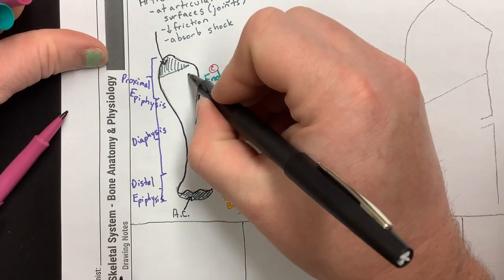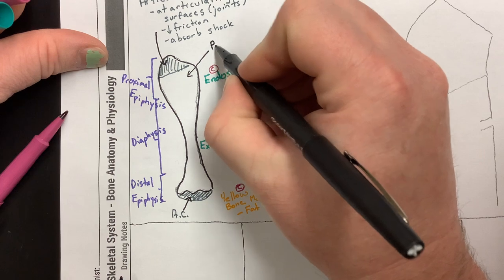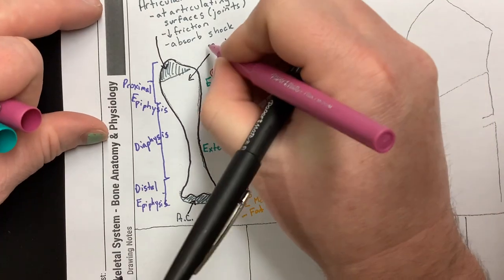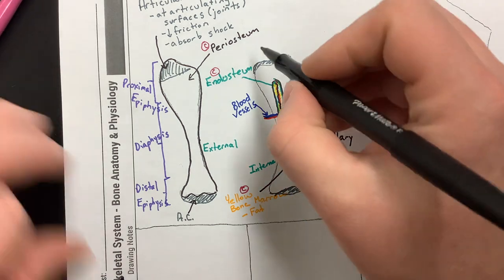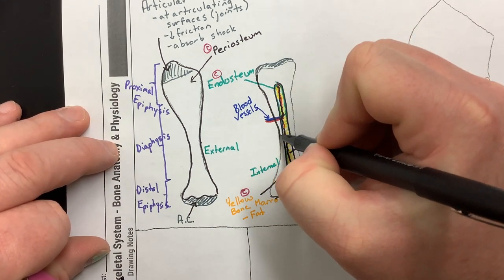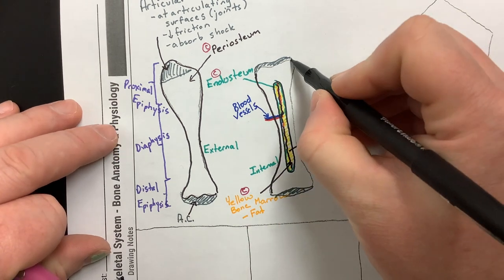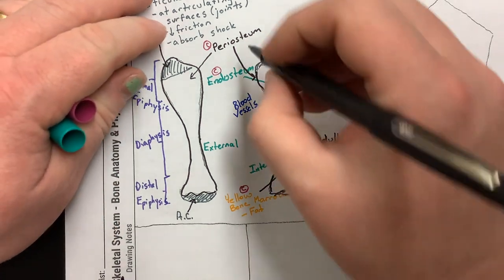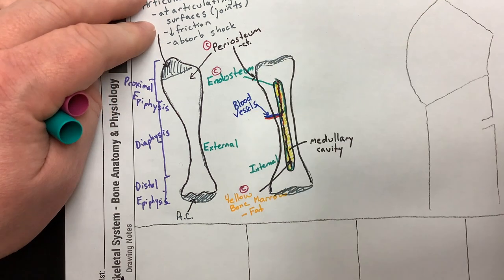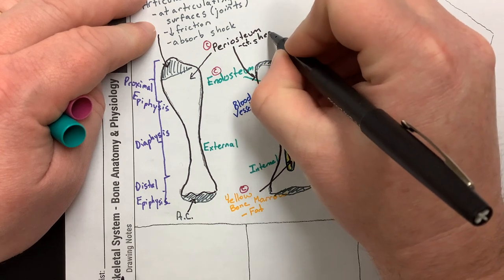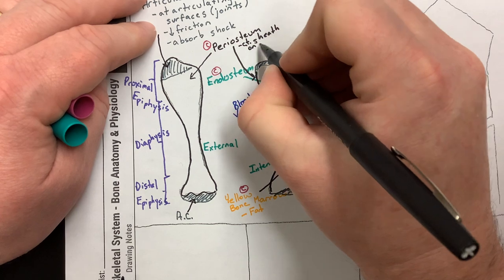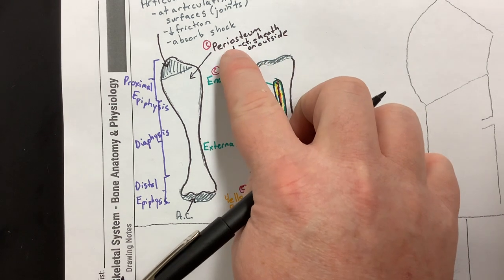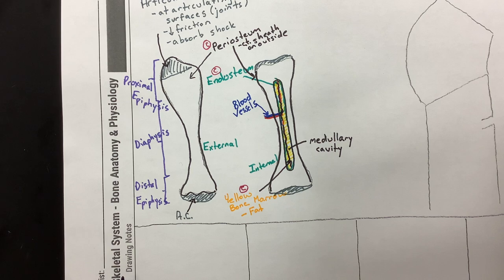On the outside of bone is a similar layer called the periosteum — also a connective tissue layer, but on the exterior of the bone. The periosteum is a connective tissue sheath on the outside of the bone, and it is the site where tendons attach muscles to bones by weaving into it, and where ligaments attach bones to each other.